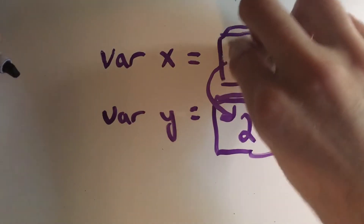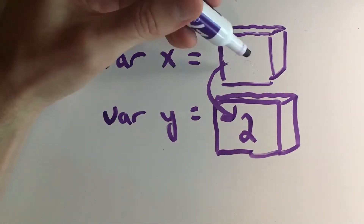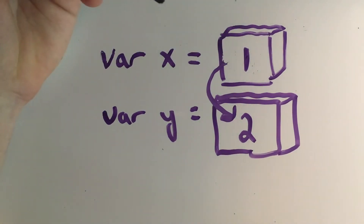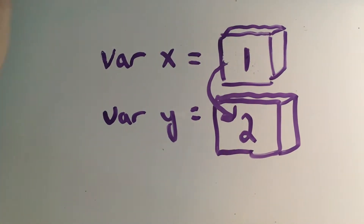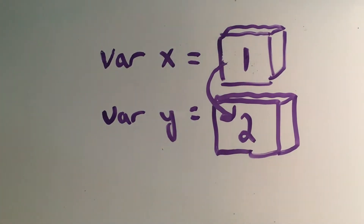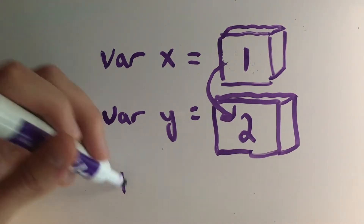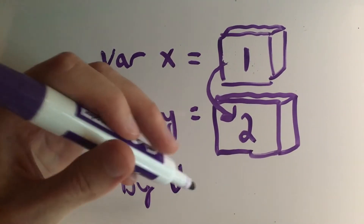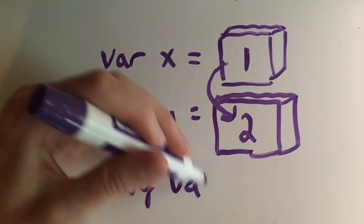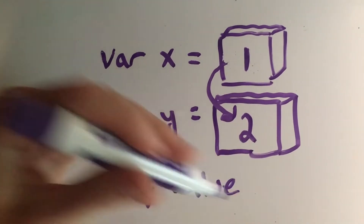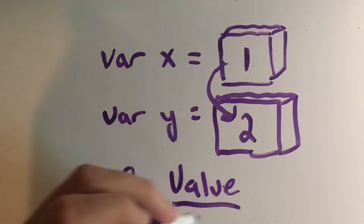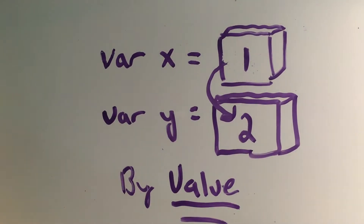So then later on if in the code we decide to overwrite the value of X to 1, Y is never affected. This is called passing by value, which is what most of JavaScript does — except for objects and arrays, which we'll see in a second, and which pass by reference.